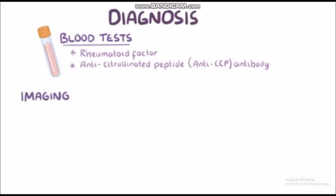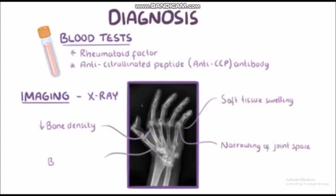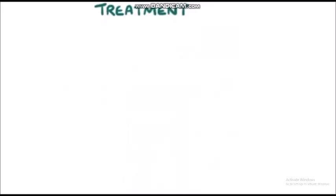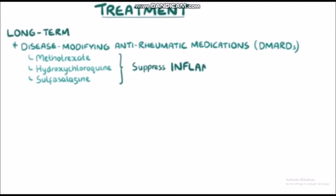Imaging studies such as X-ray usually reveal decreased bone density around the affected joints, soft tissue swelling, narrowing of the joint space, and bony erosions. The long-term management of rheumatoid arthritis involves disease-modifying anti-rheumatic medications like methotrexate, hydroxychloroquine, and sulfasalazine, which help suppress the inflammation.